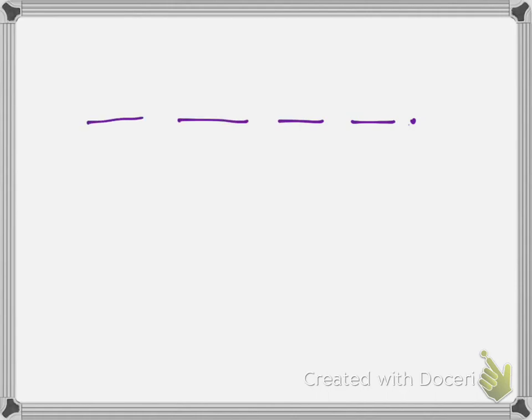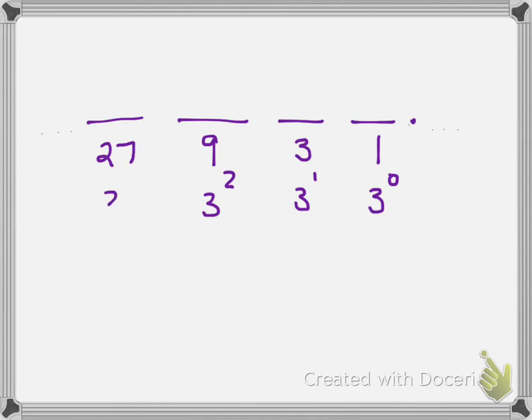In base 3, we're not going to worry about the decimals anymore. We're going to say it follows the same pattern. This is still the ones place, this is the threes, this is the nines, and this is the 27s place, and it could keep going forever. So this is 3 to the zero, the 3 is 3 to the first, the 9 is 3 squared, and the 27 is 3 cubed.